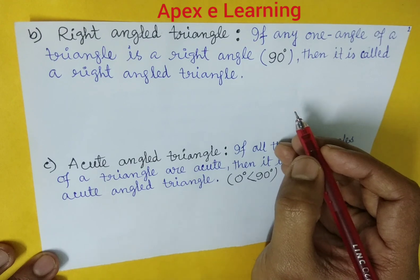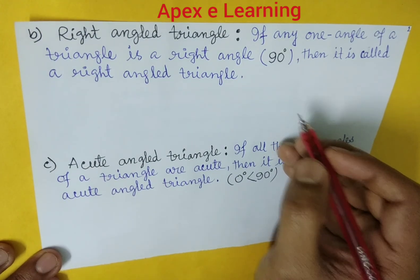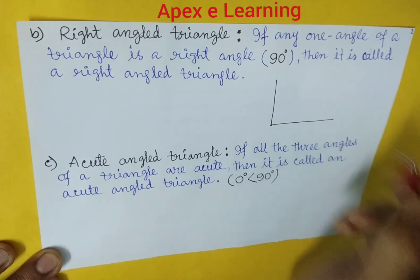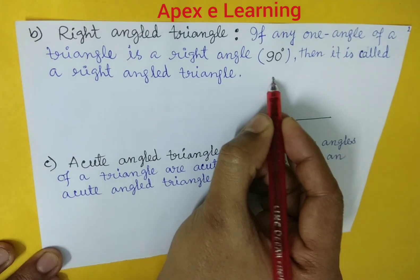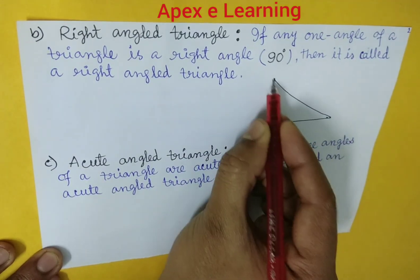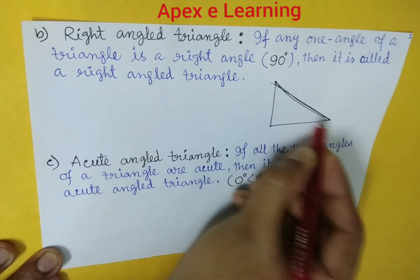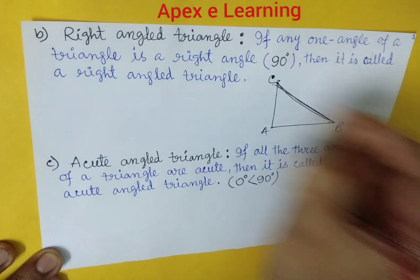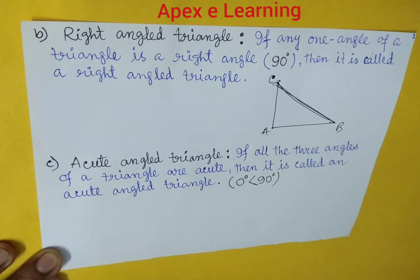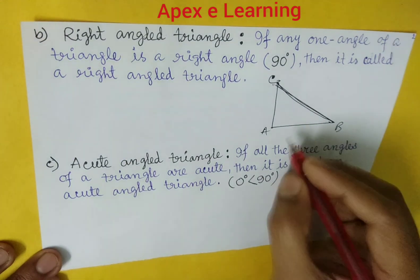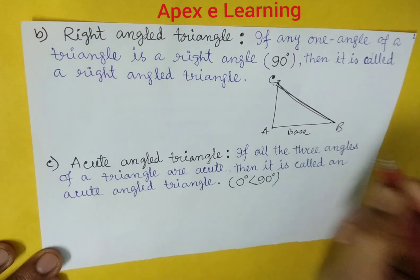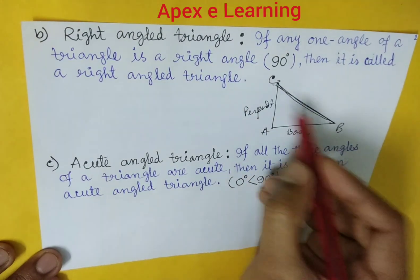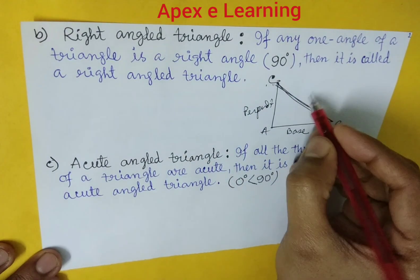If we draw a diagram, in figure ABC: AB is equal to the base, AC is equal to the perpendicular, and CB is equal to the hypotenuse.